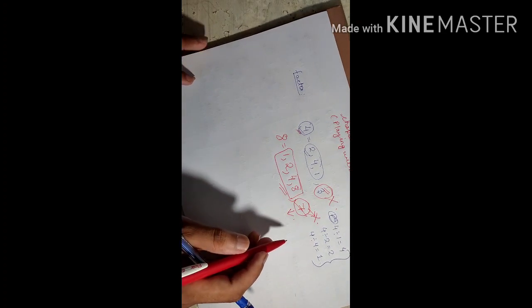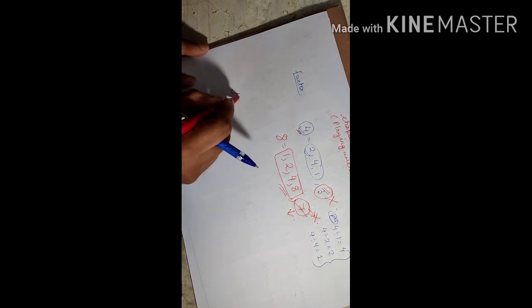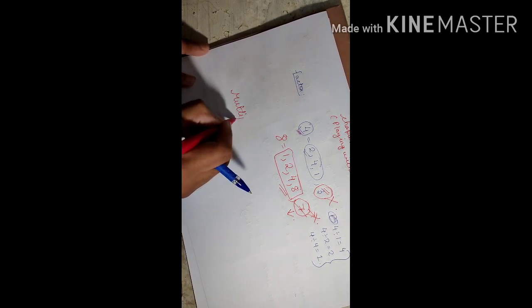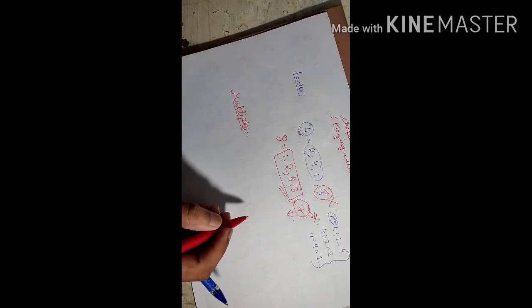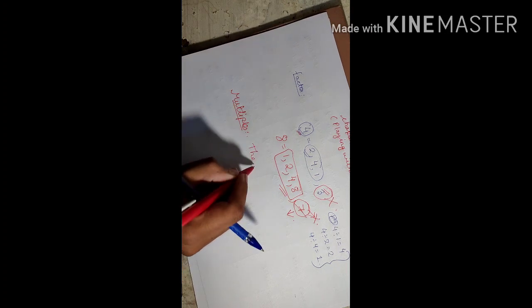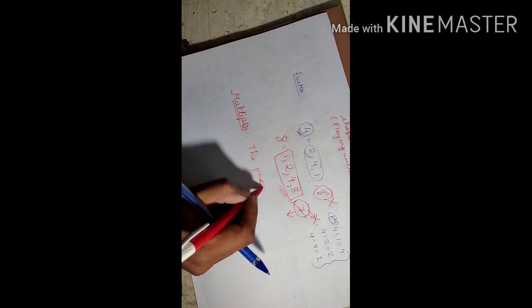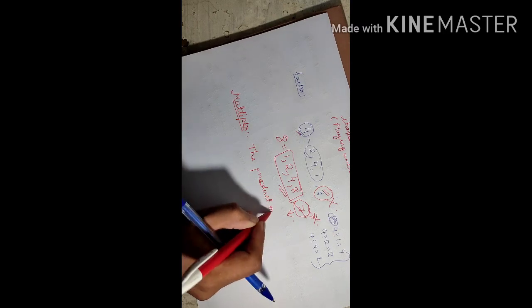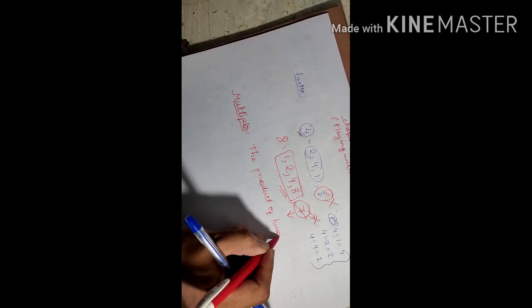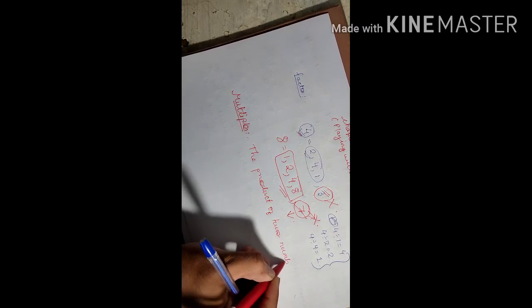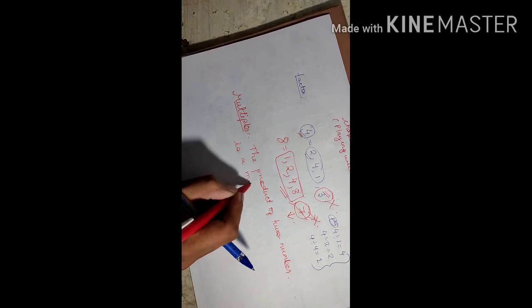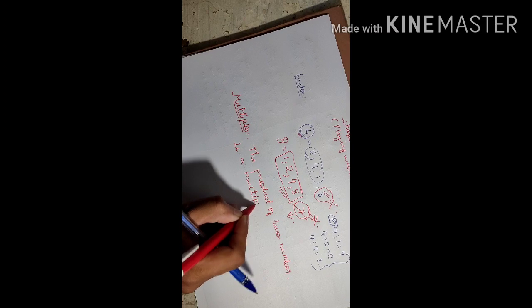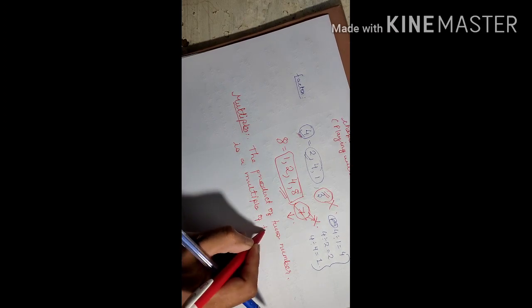Now we need to know what multiples are. In definition terms, the product of two numbers is a multiple of those two numbers.